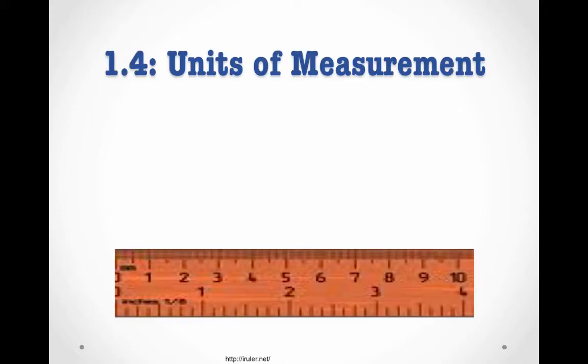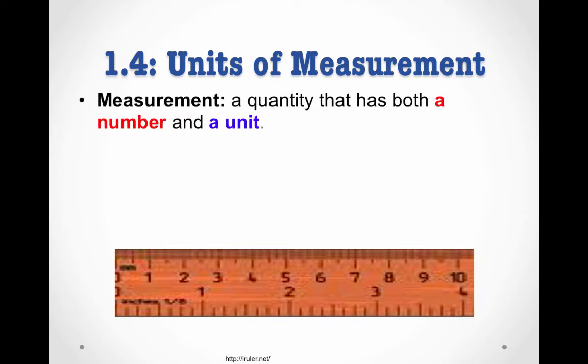So first of all, what is a measurement? A measurement is a quantity that has both a number and a unit. It's the unit that makes a measurement a measurement. So for example, if I say something weighs 125 grams, grams is your unit. That's what makes it a measurement.